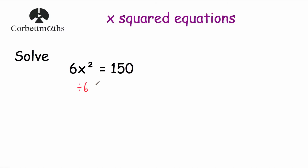So we divide both sides by 6: 6x squared divided by 6 gives us x squared, and on the right hand side 150 divided by 6 is 25. So we've got x squared equals 25.